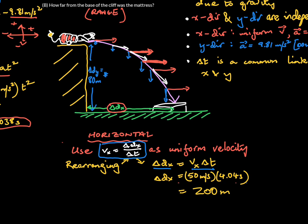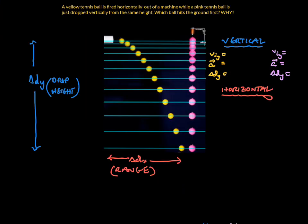Now that we've worked through a practice problem, I want to give you a conceptual problem. A yellow tennis ball is fired horizontally out of a machine while a pink tennis ball is dropped vertically from the same height. Which ball hits the ground first and why?